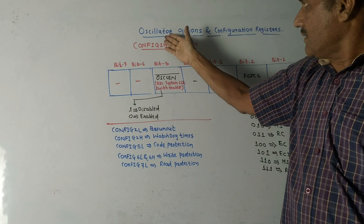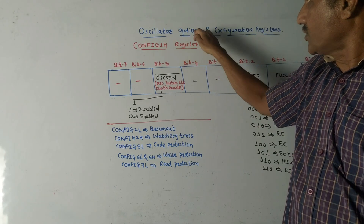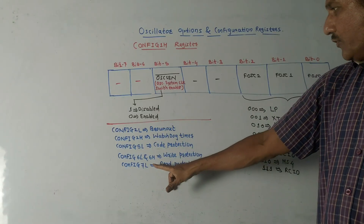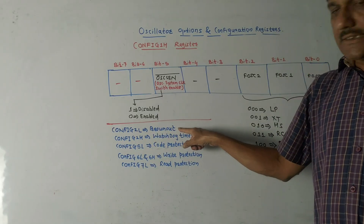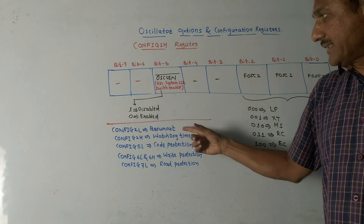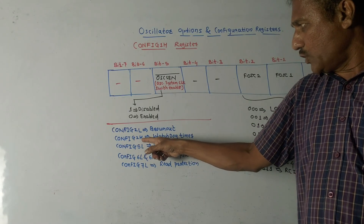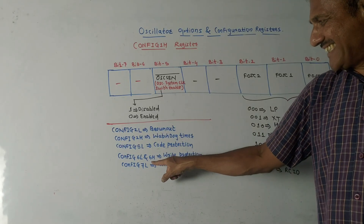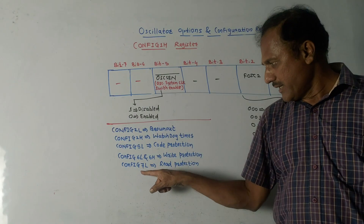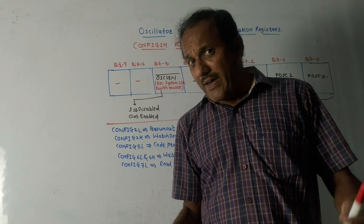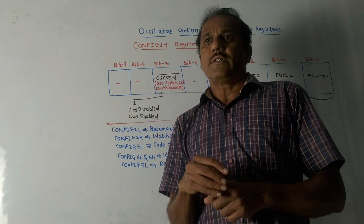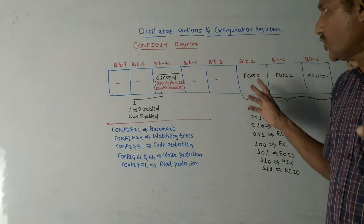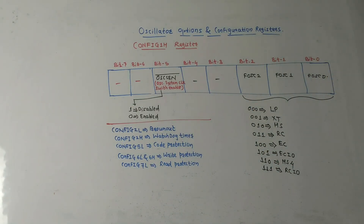This CONFIG1H register is basically related to oscillator options. There are some other important configuration registers as well: CONFIG2L is related to brown-out condition; CONFIG2H is related to the watchdog timer; CONFIG5L is related to code protection; CONFIG6L and CONFIG6H are related to write protection; and CONFIG7L is related to read protection. All these configuration bits are related to these registers. That's it for today's session — thank you for watching this video.